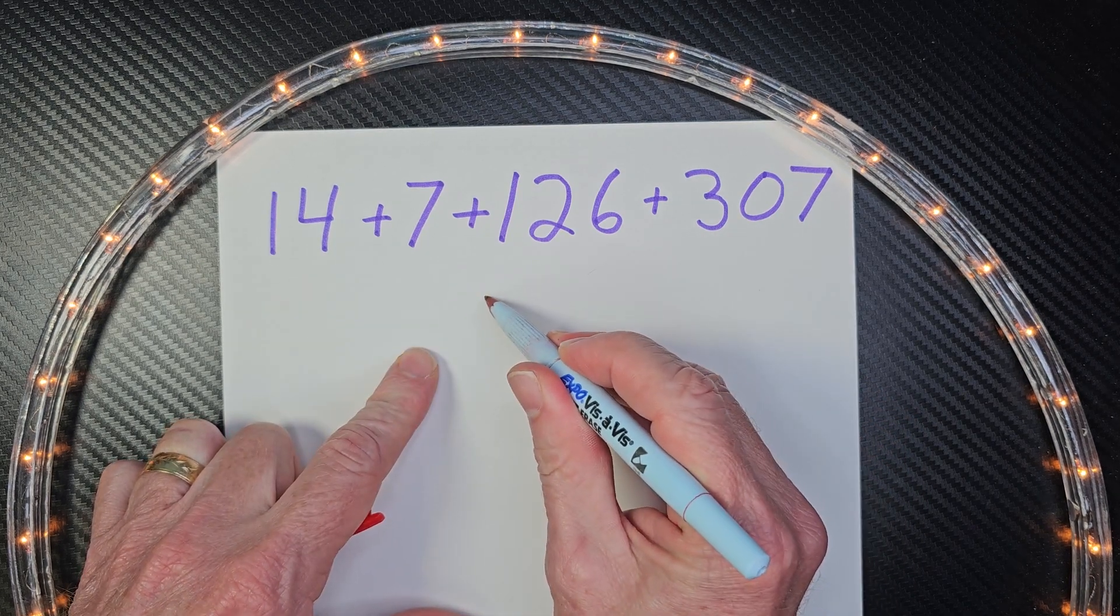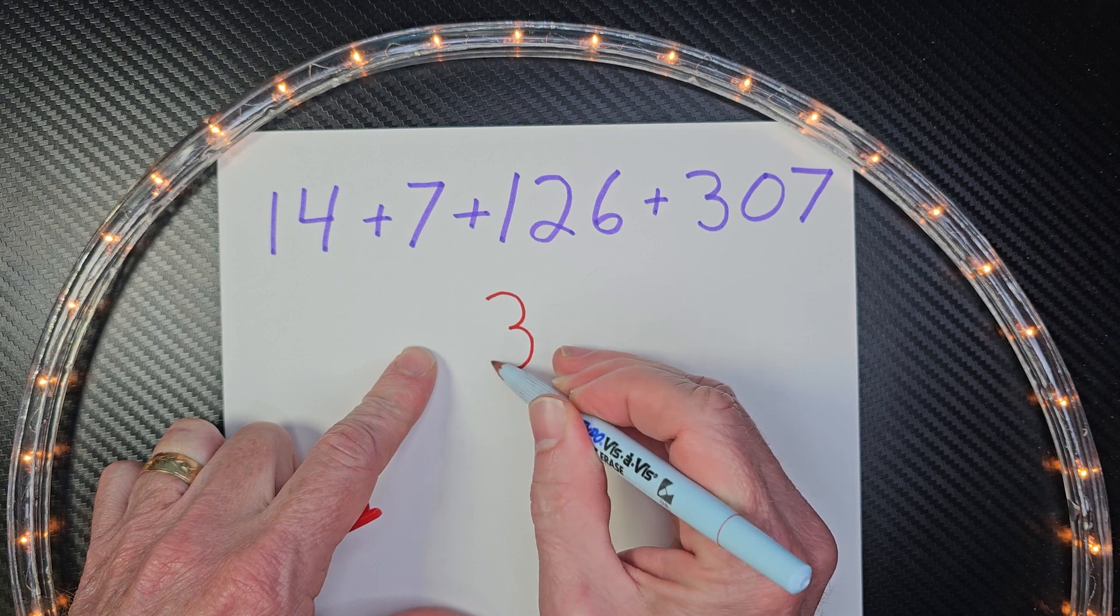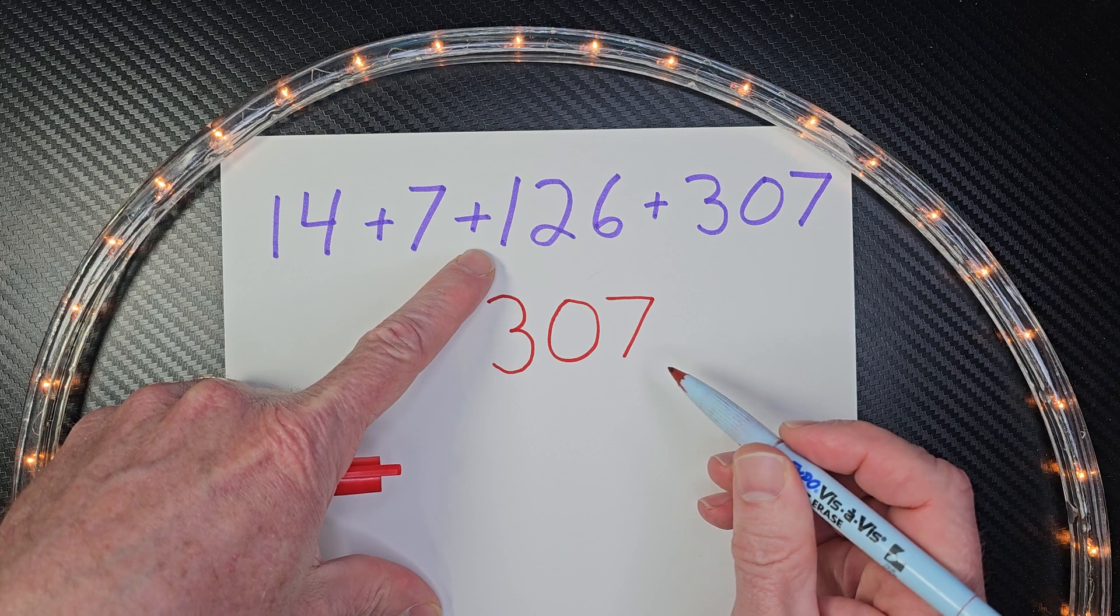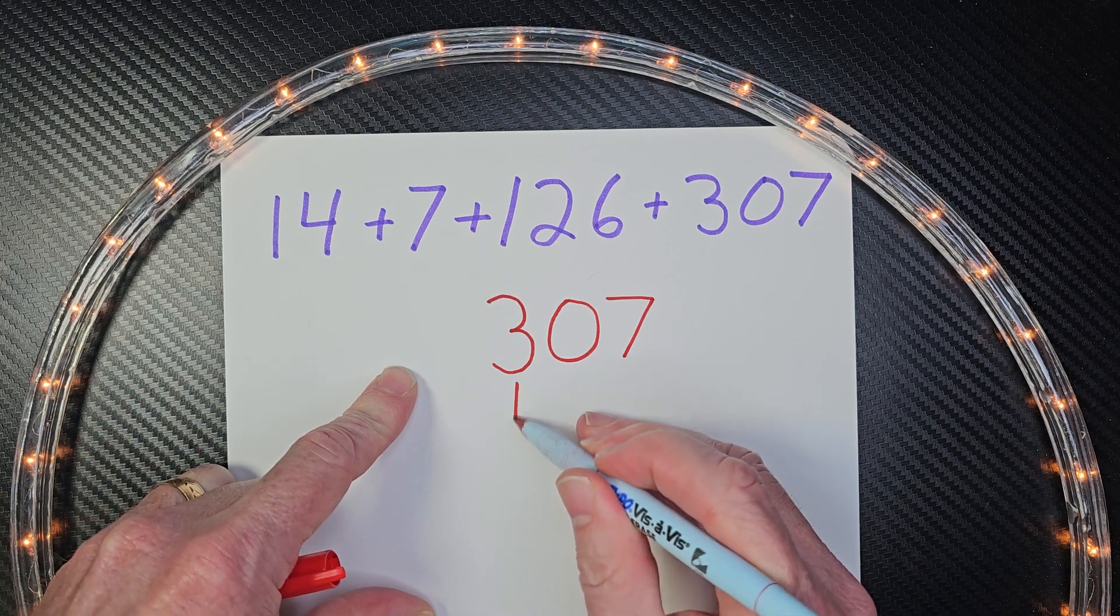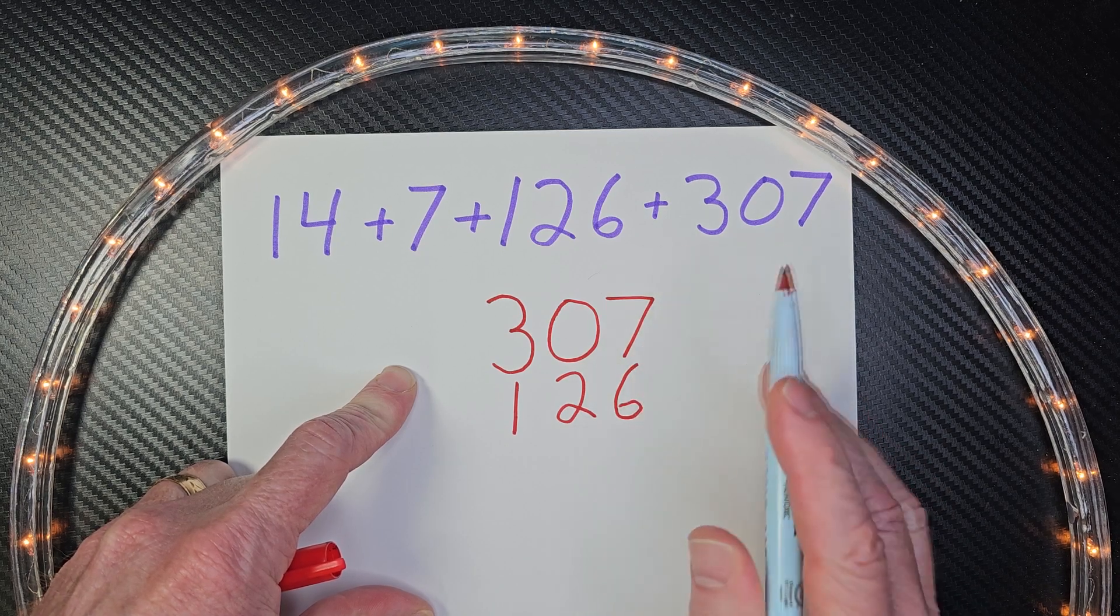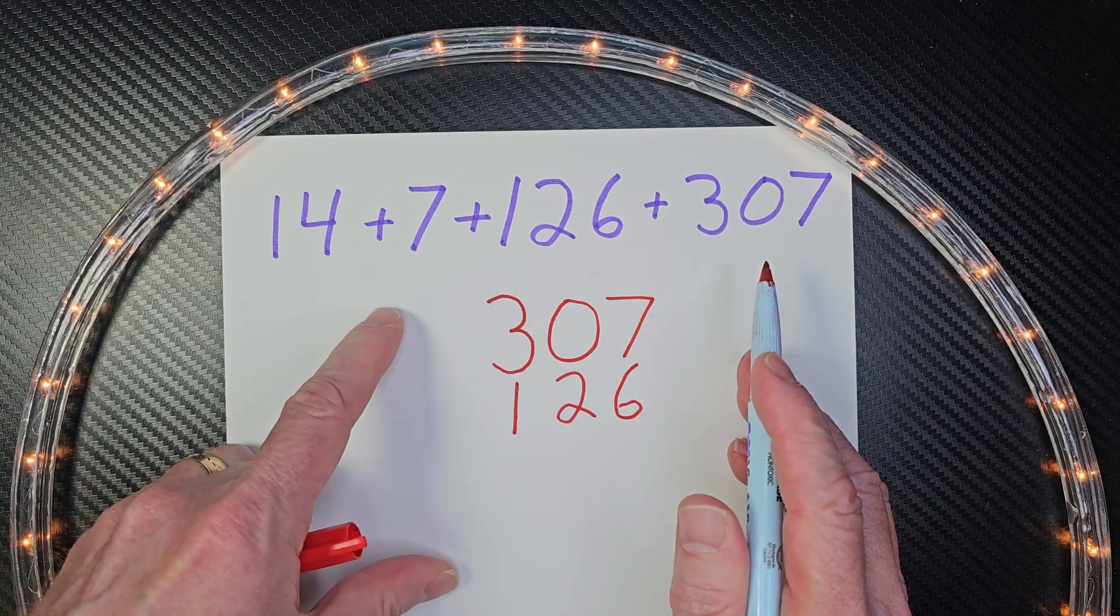I'm going to go ahead and put 307 right here. And then I'm going to put 126 right below it. And you can see I'm lining all these numbers up correctly and neatly.